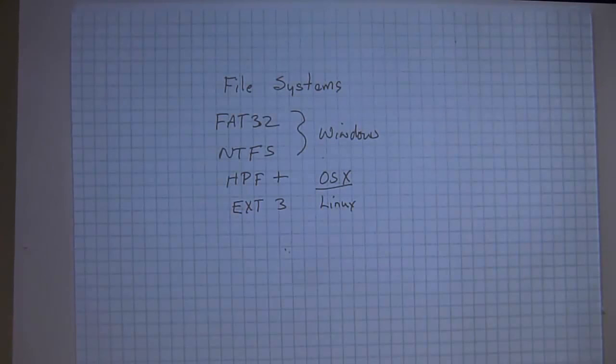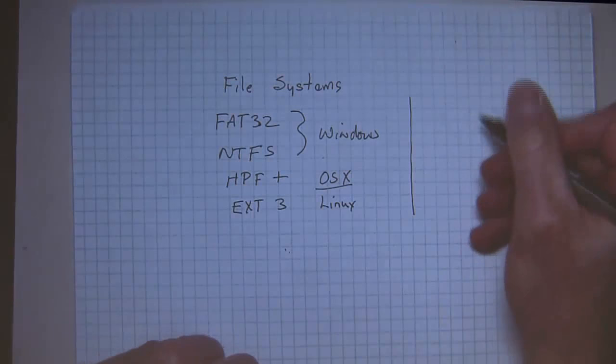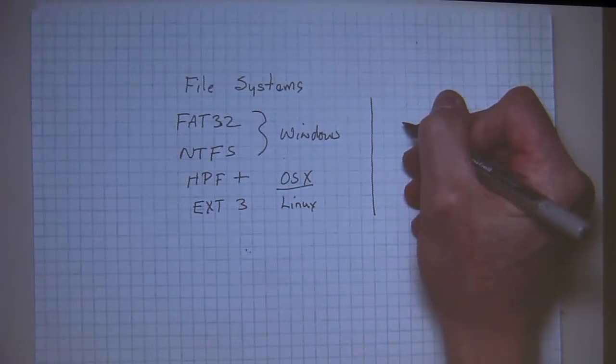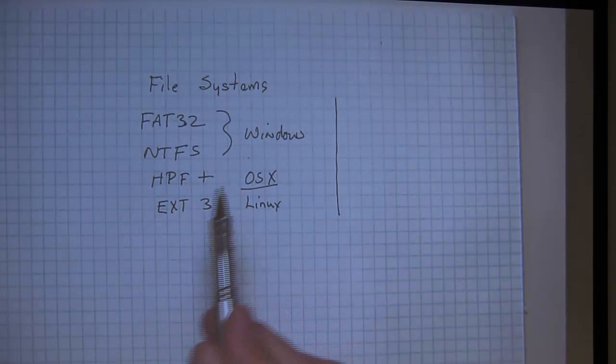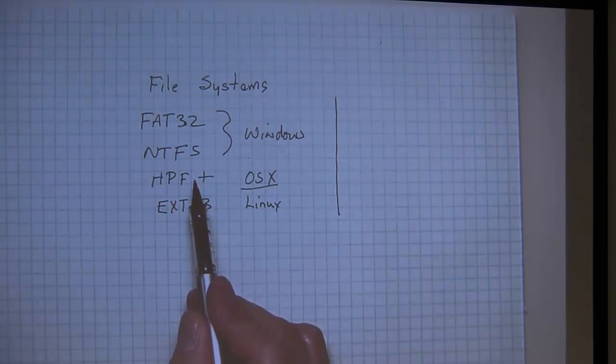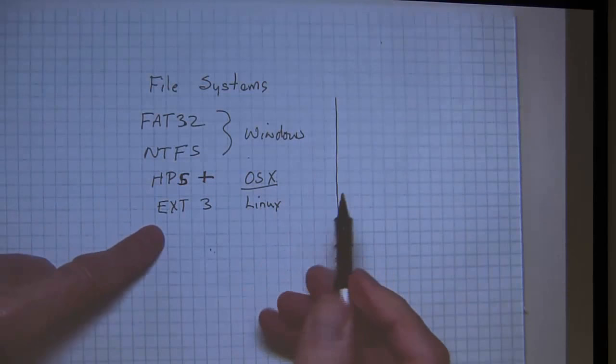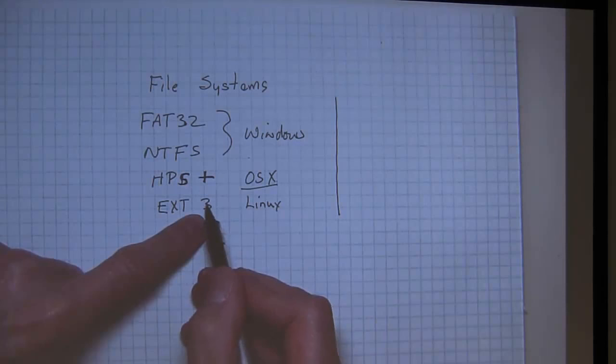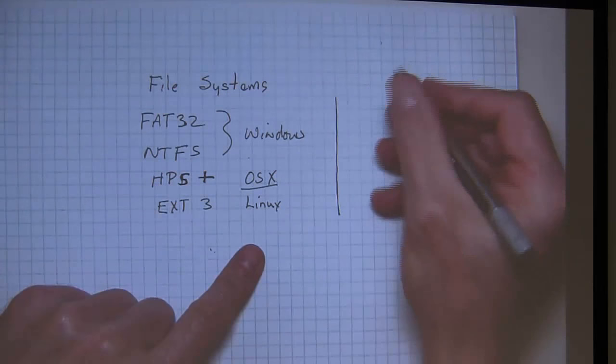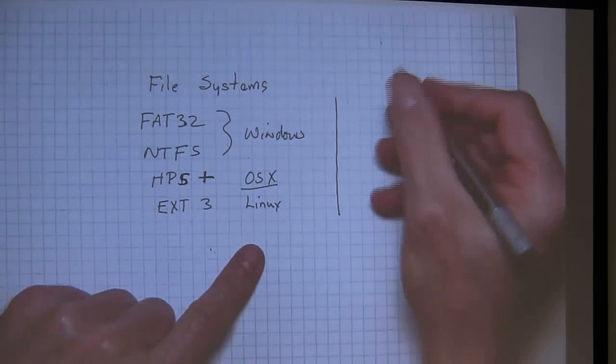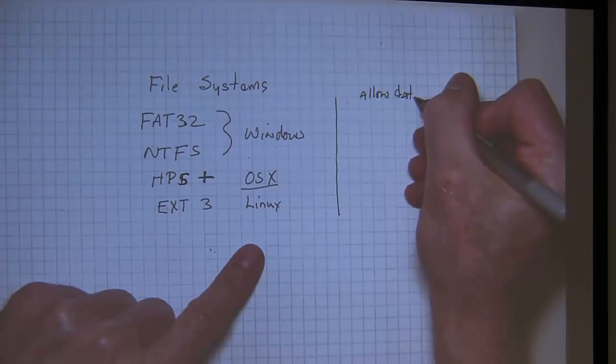A couple things to remember about file systems. File systems are all about allowing the storage, listen carefully, the storage and retrieval of data. So the FAT32 file system, the NTFS file system, the HFS plus, extended 3, variations of file systems for the Linux, depending on which one you use. These file systems allow data storage and retrieval. Second thing that you want to understand about file systems is that they have a couple similarities. How they deal with file names, how they deal with directories. Also, how they deal with metadata. This is very important.